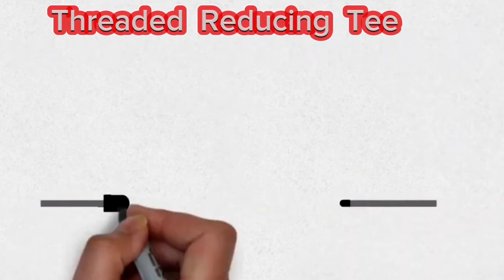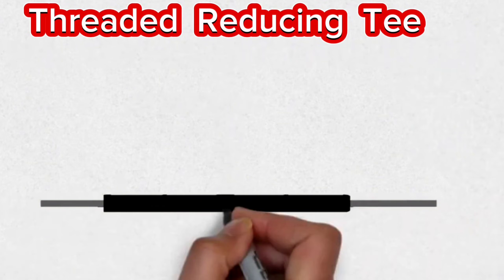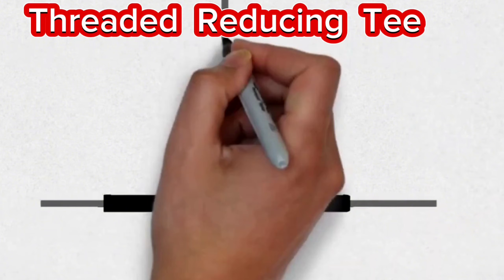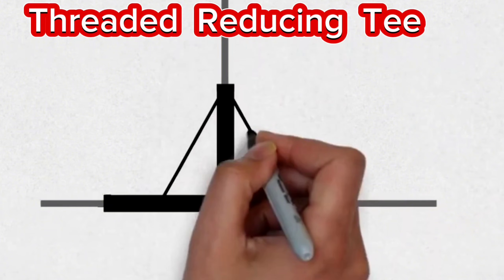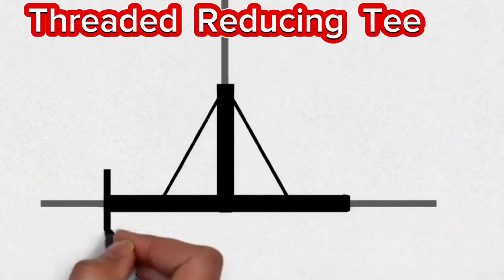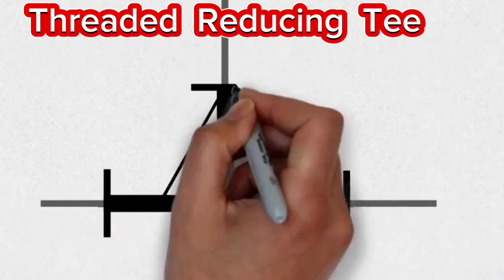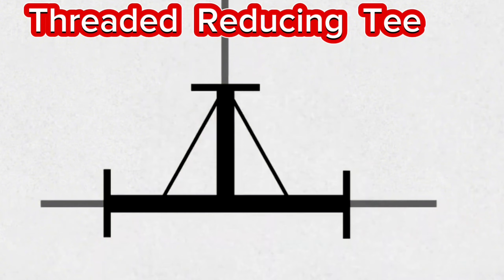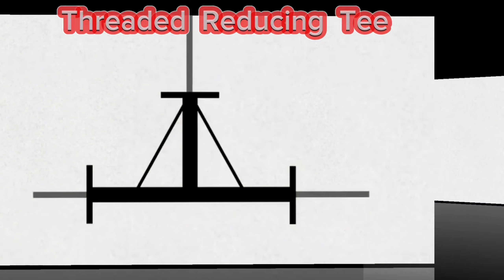This symbol, which is used in pipe isometrics, is the isometric symbol of the threaded reducing pipe T. These reducing T symbols are used in threaded pipeline isometrics.